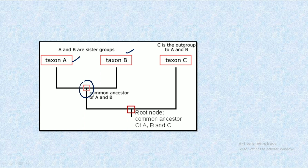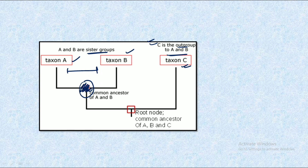Because Taxon C is less closely related to Taxon A and B compared to each other, C is called the outgroup to A and B. Taxon A and Taxon B have a much closer relationship with each other, hence the name sister groups. Taxon C shares a common ancestor with A and B but is not as closely related, so it is the outgroup in relation to Taxon A and Taxon B.